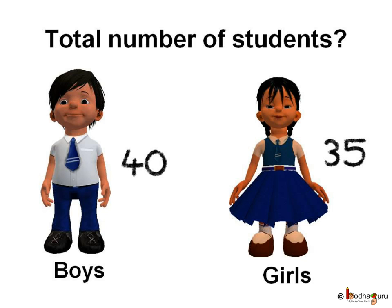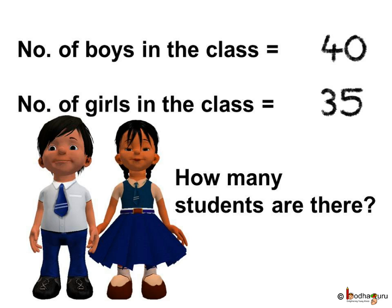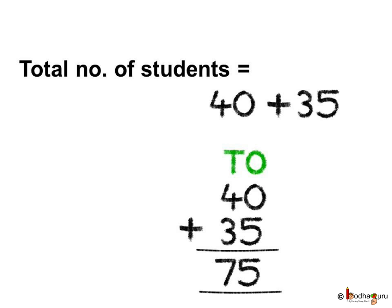In a class there are 35 girls and 40 boys. How many students are there in total in that class? Let us see what we need to find. We know the number of boys in the class are 40 and the number of girls in the class are 35. Now we need to find the total number of students.